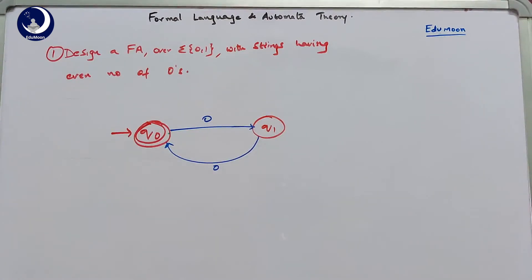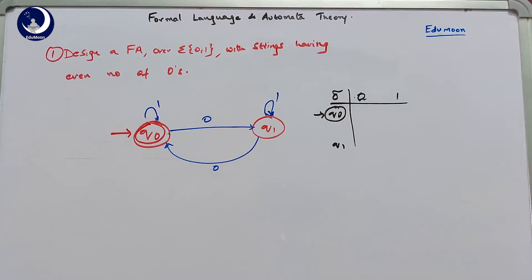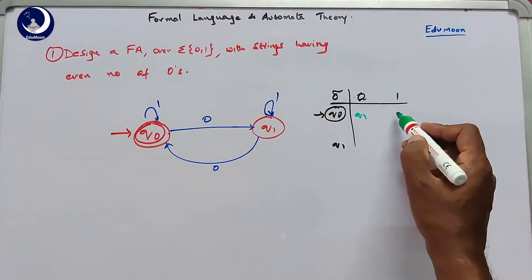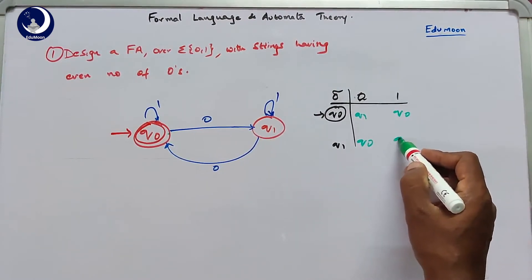Therefore, we make q0 as a final state so that it gets accepted when the total number of zeros is even. Now coming to ones, there is no restriction on the number of ones, so we simply write a self-loop on both states. So q0 on 0 goes to q1, but q0 on 1 comes back to q0 because there is no restriction on the number of ones. Reading the transition table, q0 is both the final state and initial state; q0 on 0 goes to q1, q0 on 1 stays at q0; q1 on 0 goes to q0, and q1 on 1 stays at q1.